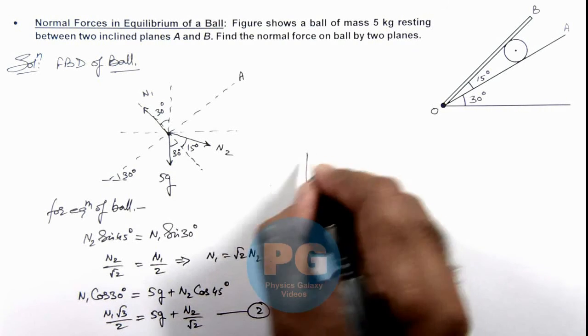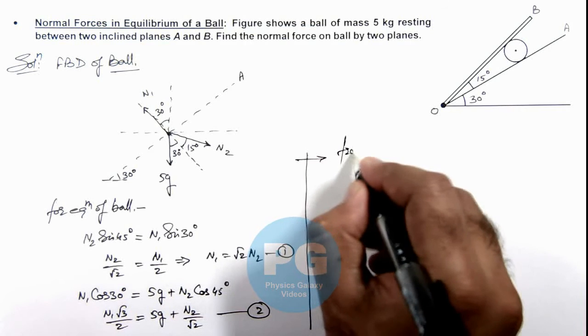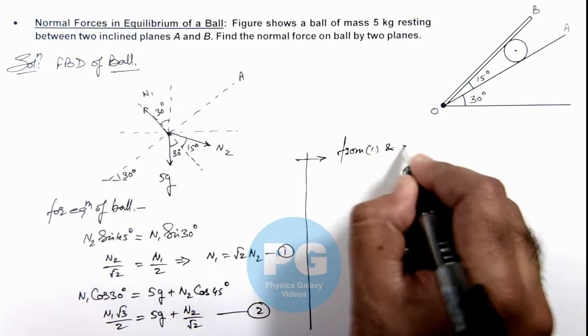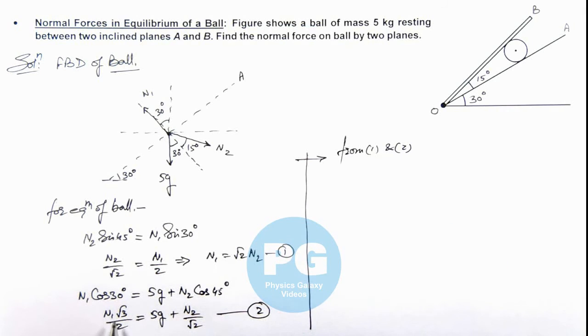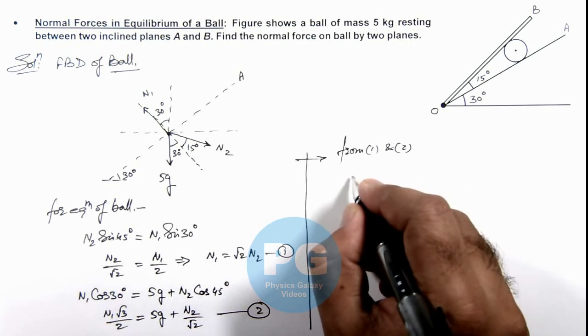If we continue, we can write from equations 1 and 2, you can see here the value of N₁ is given as √2 N₂. We can substitute the value and simplify this, which will give us N₁√3/2 equals 5g.